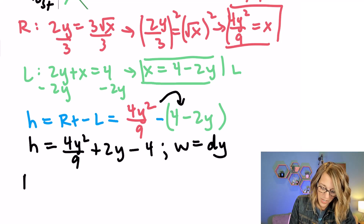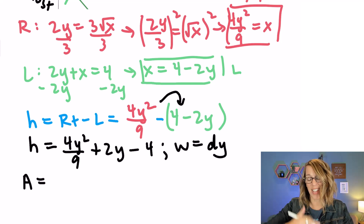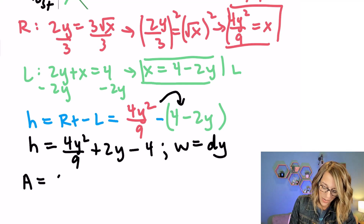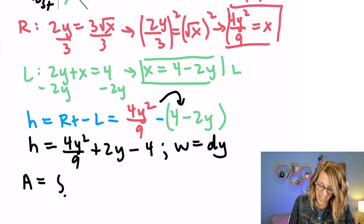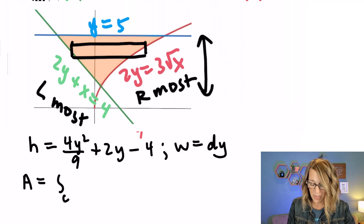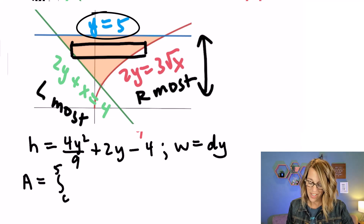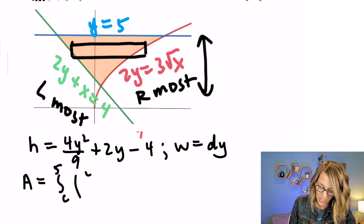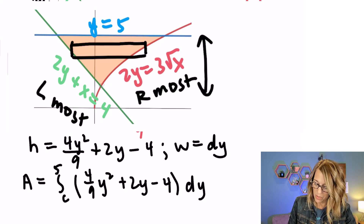We know that the area, summing up all of these stacked rectangles, is going to be from some lower y value c — I haven't figured that out yet — up to my upper limit of integration which is 5. So the integral goes from c to 5 of (4 ninths y squared plus 2y minus 4) dy.